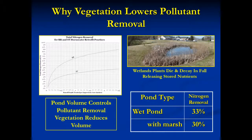There is a popular misperception that vegetation enhances pollutant removal in a pond. While vegetation might take up some pollutants, most are released when the vegetation dies and decomposes. In fact, the table on the lower right shows a wet pond with marsh traps 3% less nitrogen than ponds lacking vegetation.